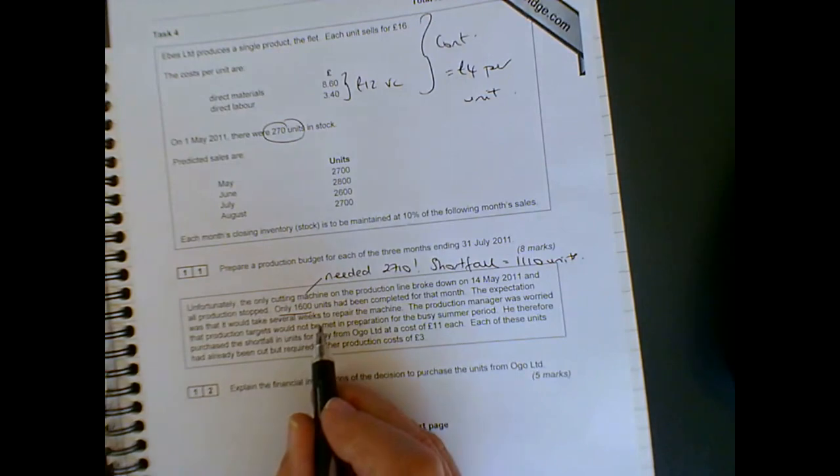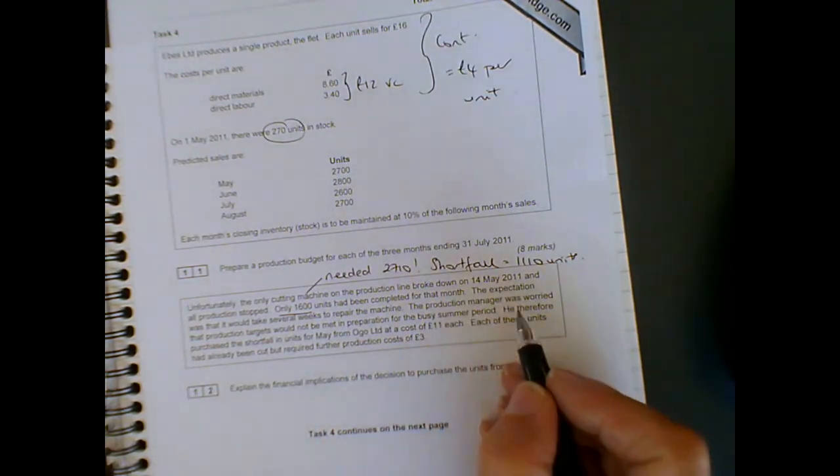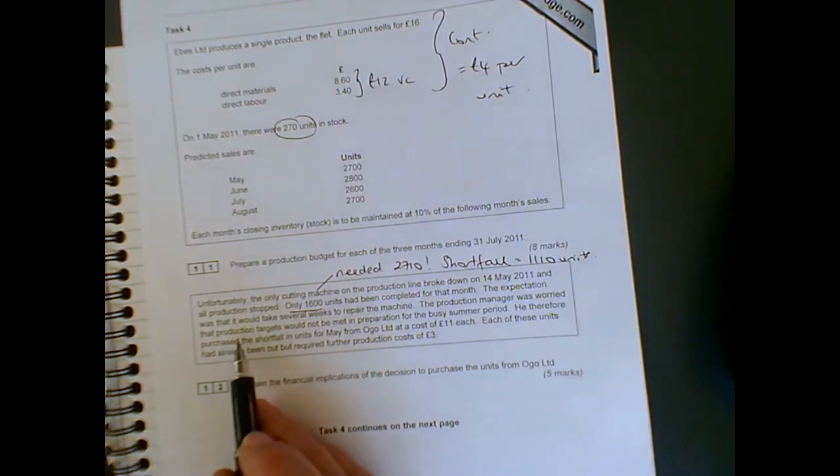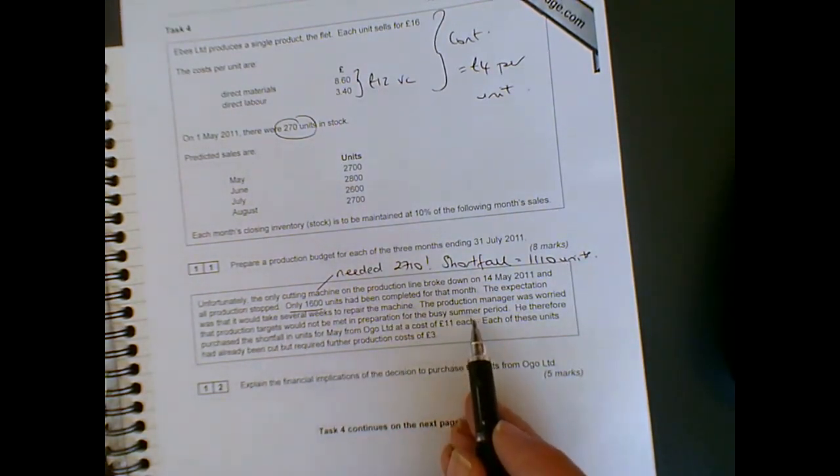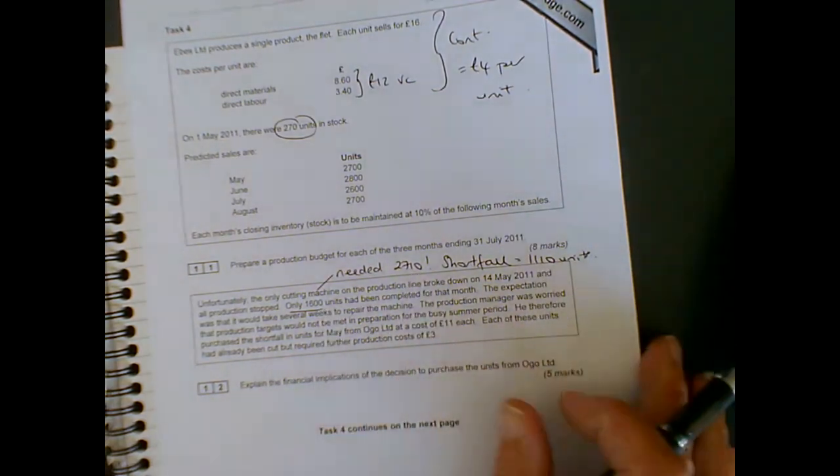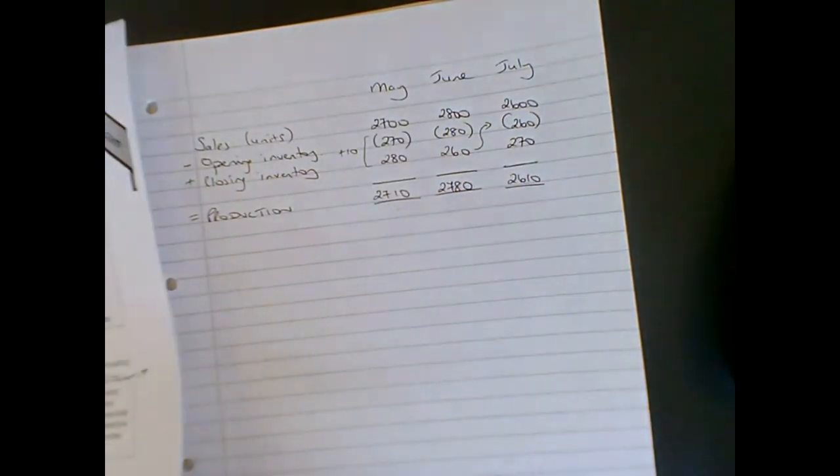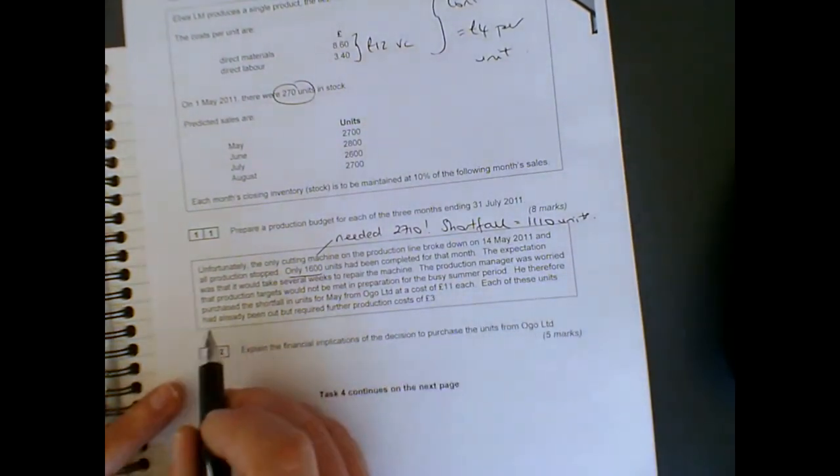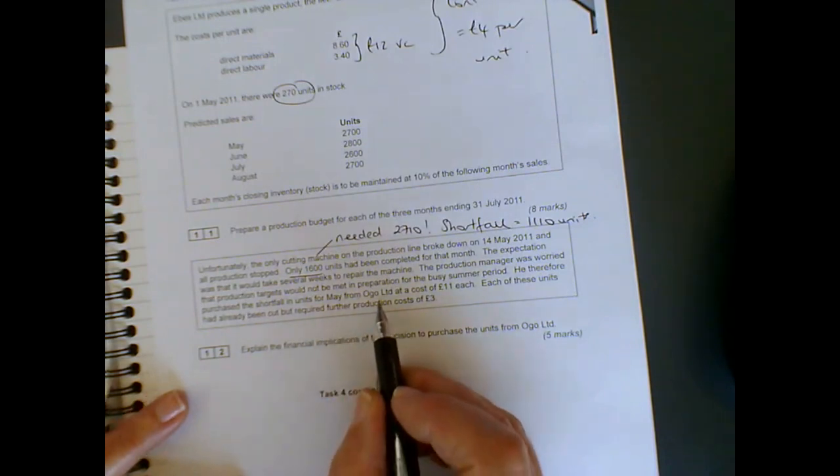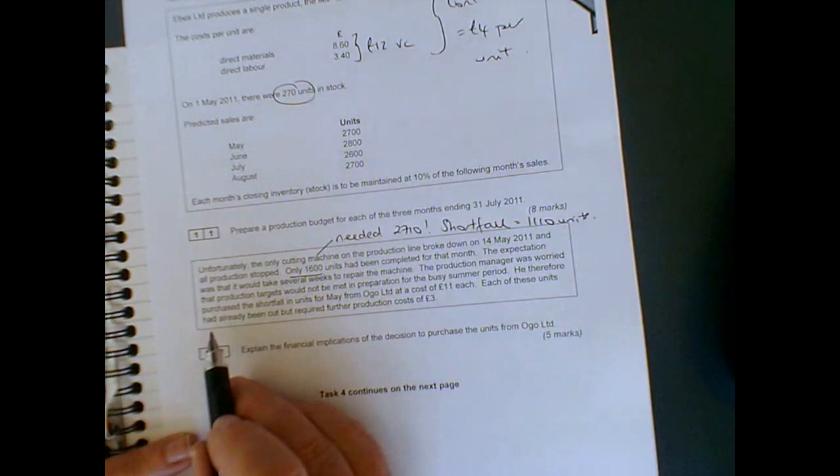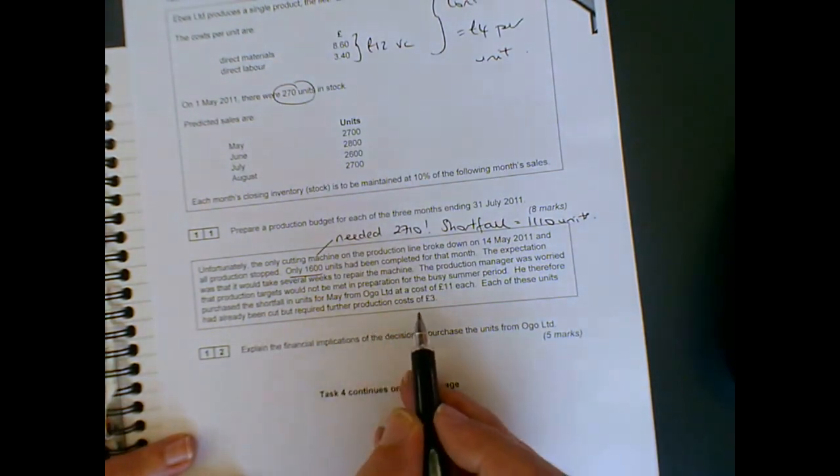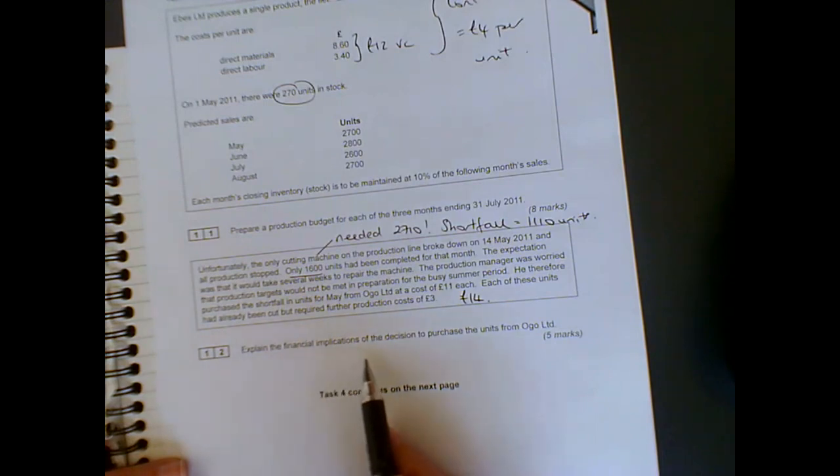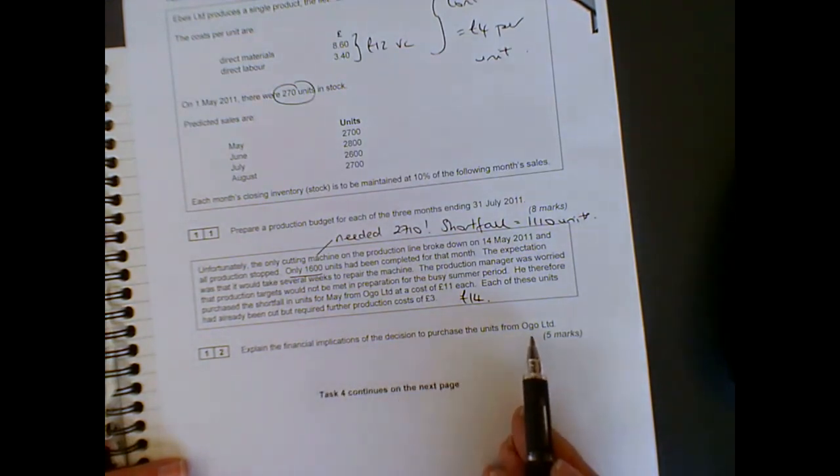The expectation was that it would take several weeks to repair the machine. It's already the 14th of May, so several weeks is going to take us well into June. The production manager was worried that the production targets would not be met in preparation for the busy summer period. We wanted 2,710, we've actually made 1,600, so we are short by 1,110. He therefore purchased the shortfall in units for May from Ogo Limited at a cost of £11 each. Each of these units had already been cut but required further production costs of £3. So actually, the costs for those are £14.